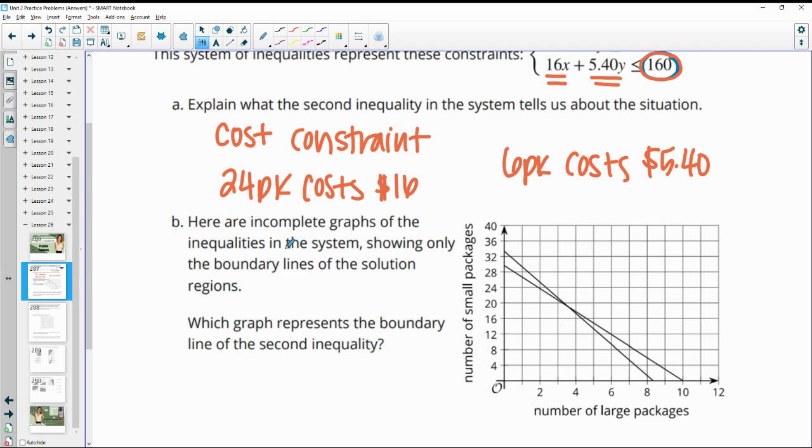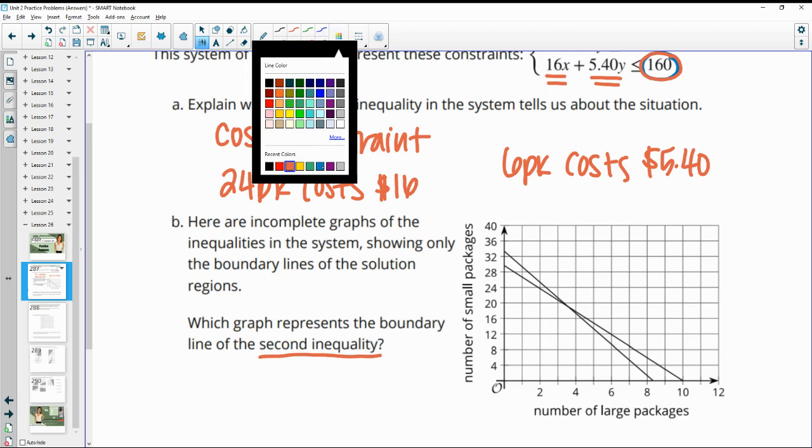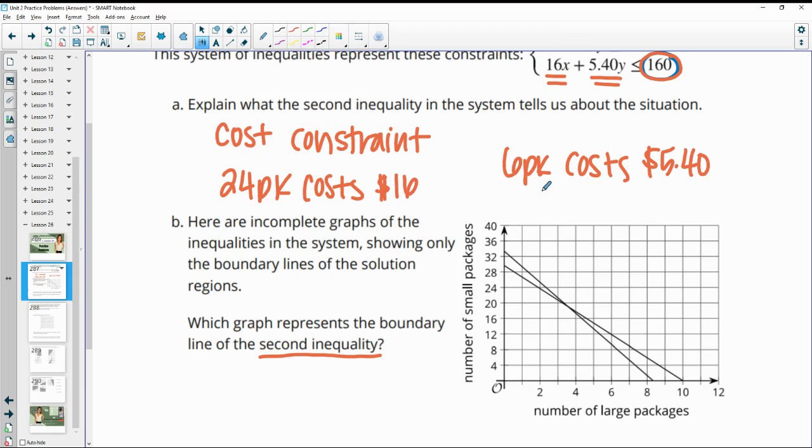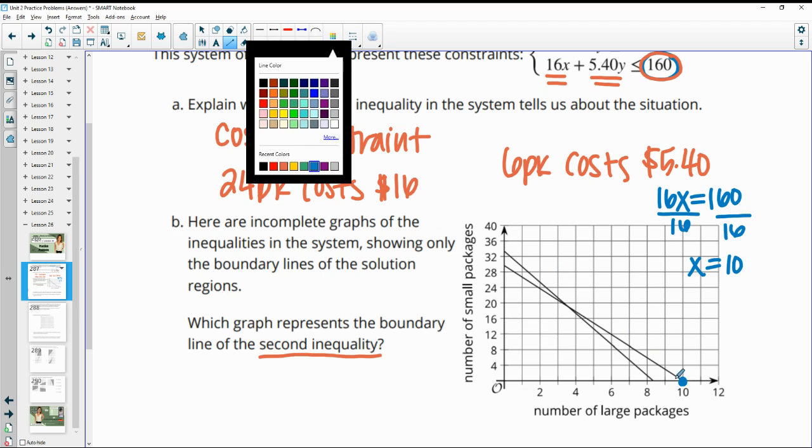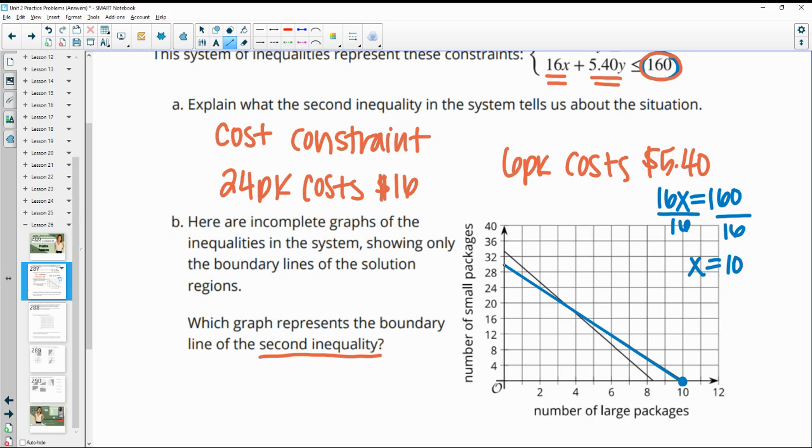Here are incomplete graphs of the inequalities of the systems, showing only the boundary lines of the solution regions. Which graph represents the boundary line of the second inequality, so this one that we're talking about here with the budget. So if they only bought these larger packs, this 16, so if they didn't buy any of the smaller packs, we could spend our entire budget on those. So that'll help us get the X-intercept. So we would get 10. So we could buy 10 of those larger packages if we didn't buy any smaller packages. So that shows us that this line here is our second inequality.